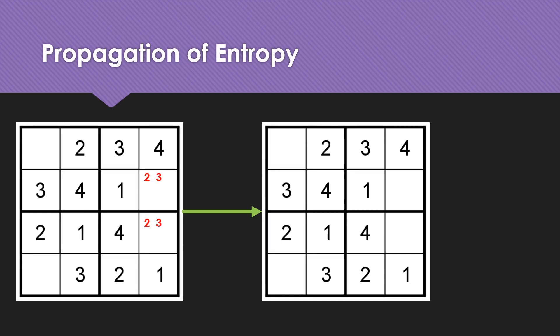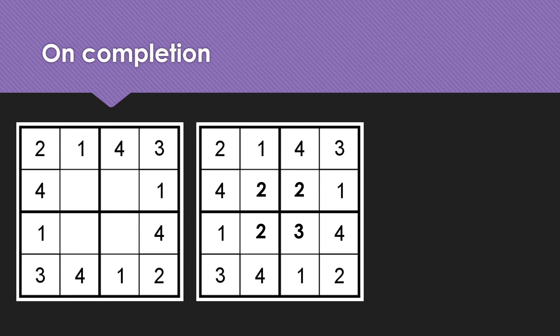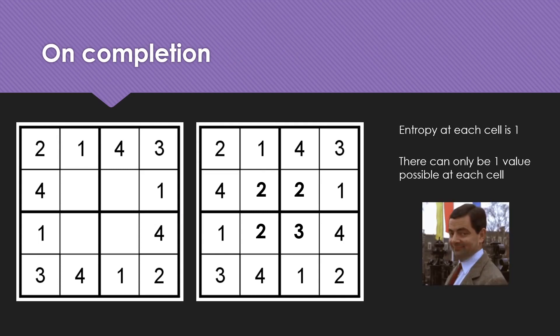The propagation of entropy is also interesting: when entropy is resolved for one cell by checking against its rows or columns, and after applying the selected value, the entropy of neighboring unresolved cells is immediately affected, meaning entropy resolution propagates to unresolved neighbors. On completion, the board looks like this, where entropy at each cell is one — there can only be one value possible at each cell location, and that is how we know the board is complete.